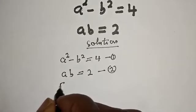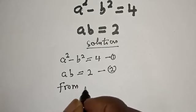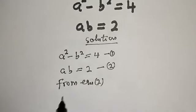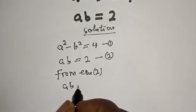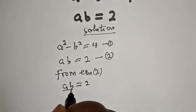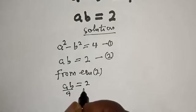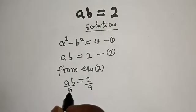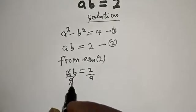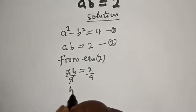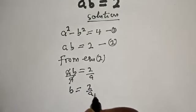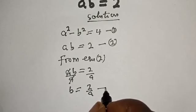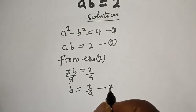From equation 2, let's make b the subject of the formula. Therefore, ab is equal to 2; dividing both sides by a, b is equal to 2 over a. Now, let's call this equation star.